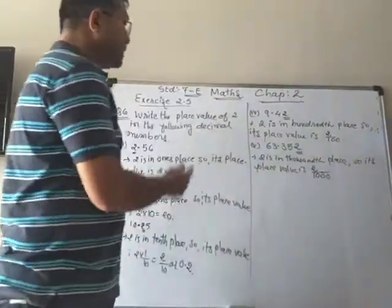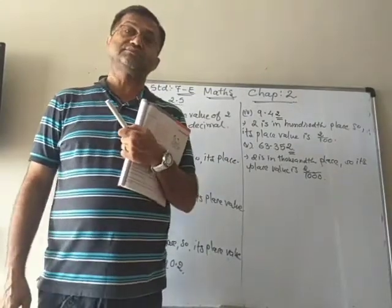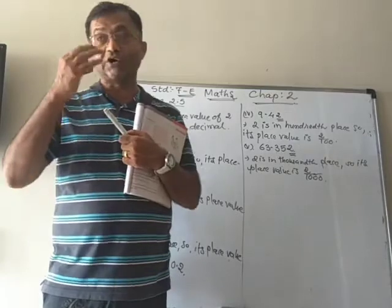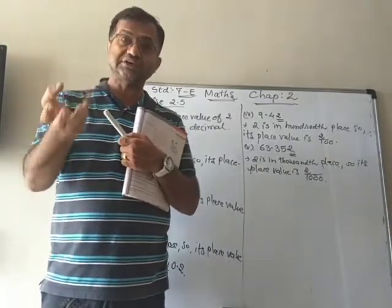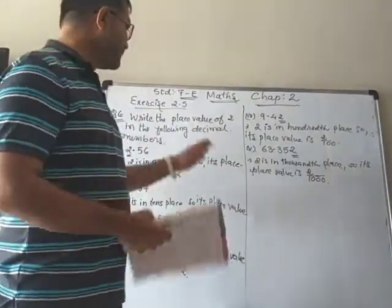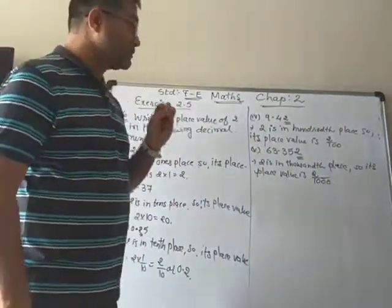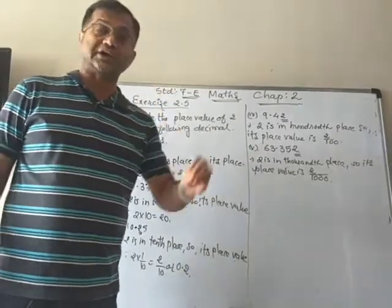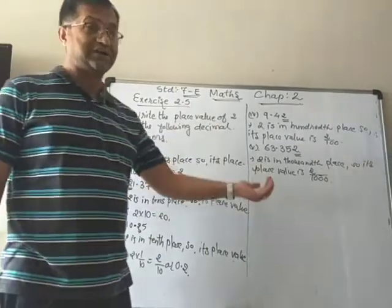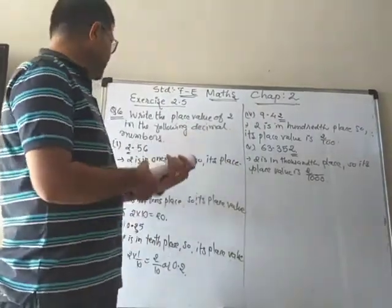The number is the same, but it is located at different places — in some numbers it is in the 1's place, 10's place, tenths, hundredths, or thousandths place, and so on. According to that place, the place value is different. You must have knowledge about where the number is located — either on the left side: 1's, 10's, 100's, or on the right side: tenths, hundredths, thousandths, etc.